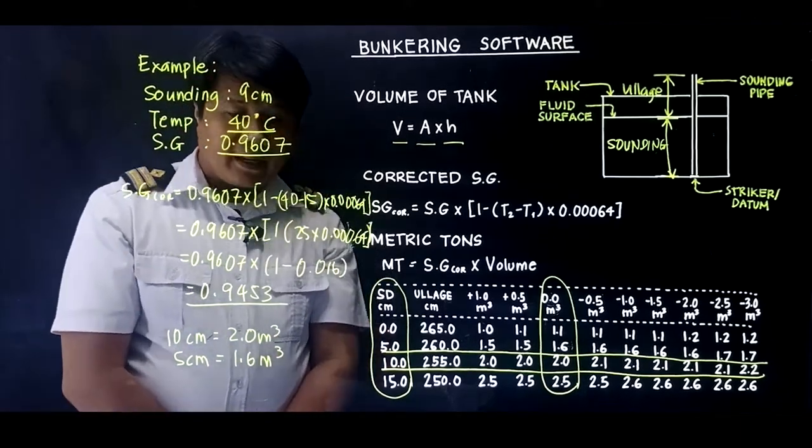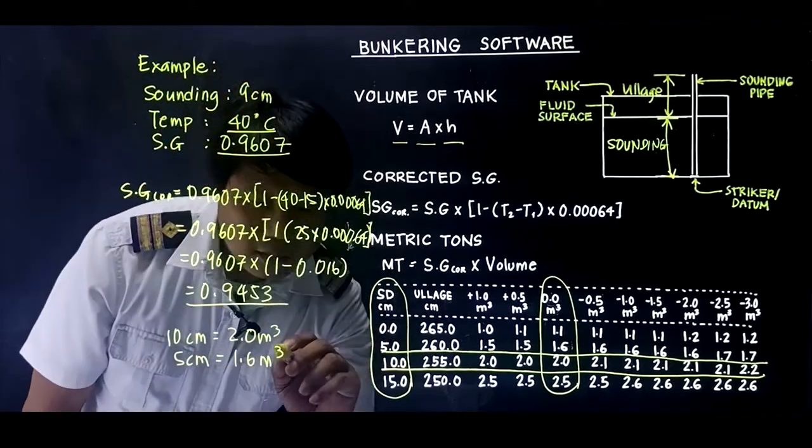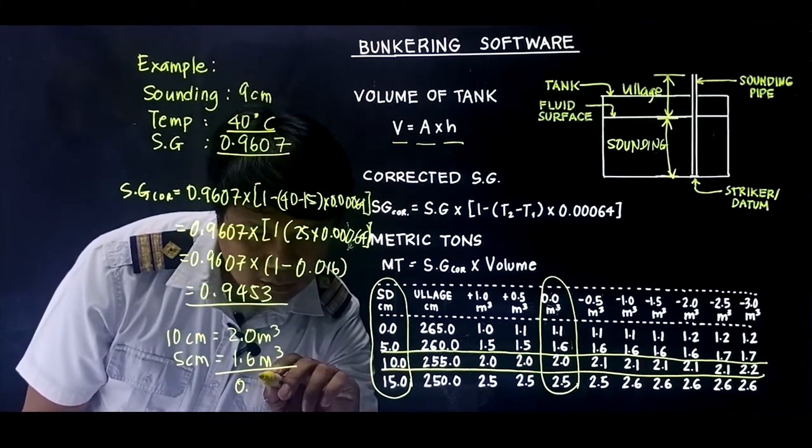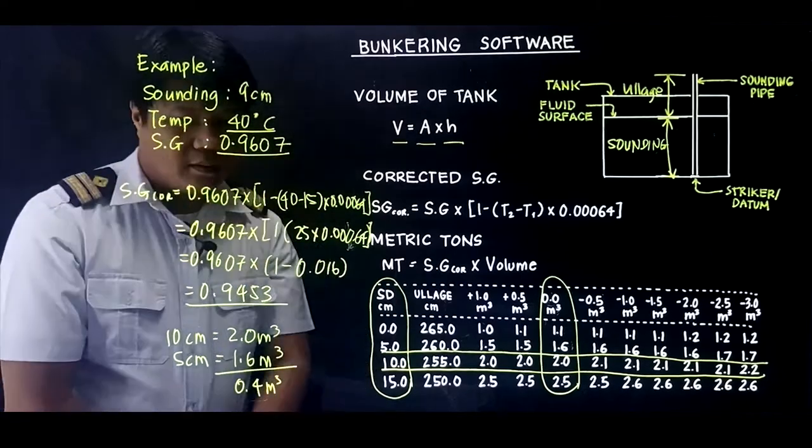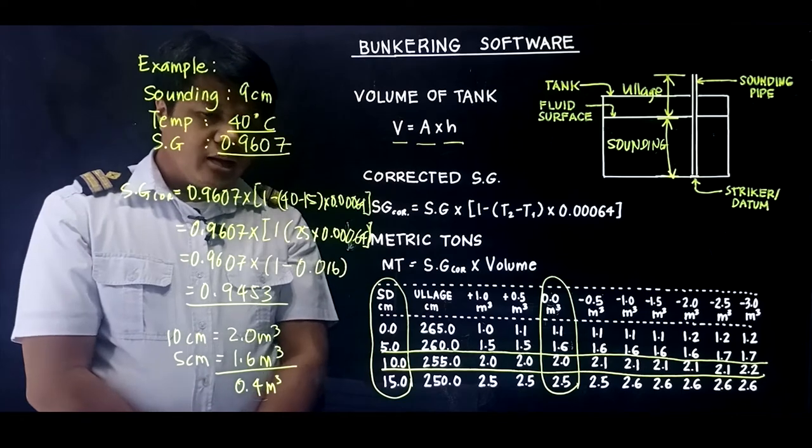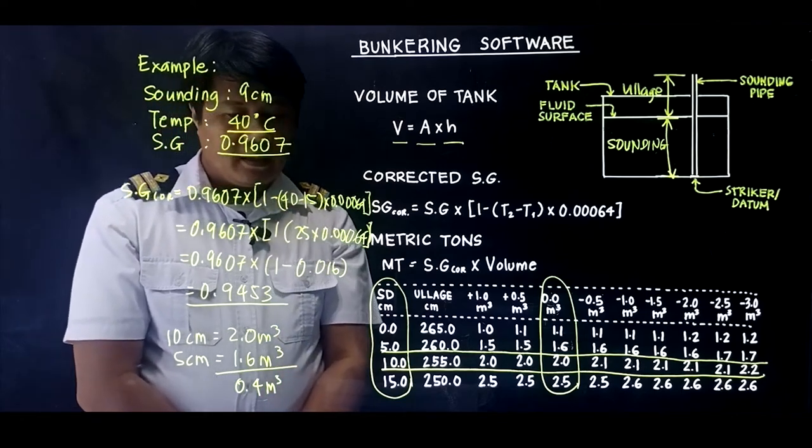So we need to subtract this. After that, we need to divide 0.4 cubic meters by 5.